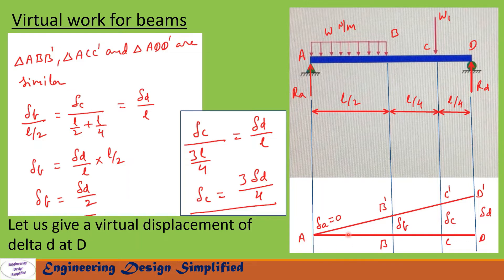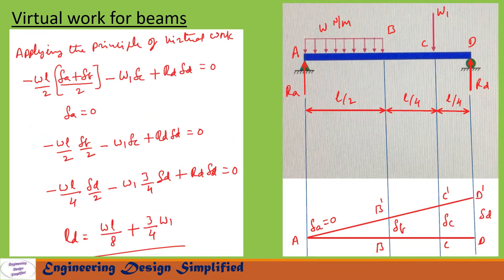To find reaction at D (Rd), let us give a virtual displacement of δd at D. The beam will assume the position A, B', C', and D'. We have triangles A-B-B', A-C-C', and A-D-D'. From these triangles we can write: δb / (L/2) = δc / (3L/4) = δd / L. Therefore δb in terms of δd is δb = δd/2, and similarly δc in terms of δd is δc = 3δd/4.